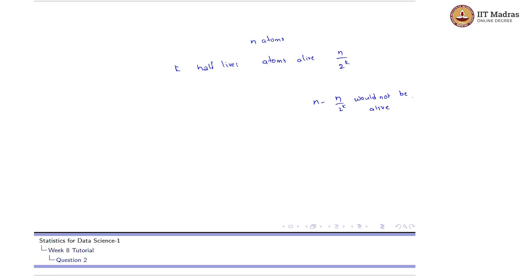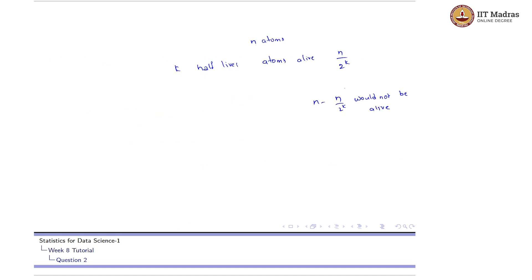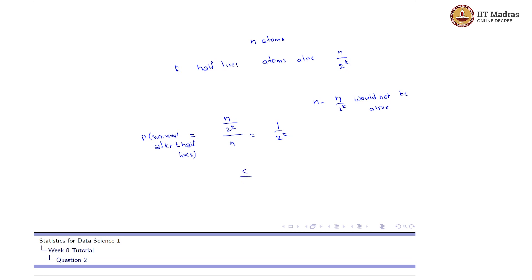For the probability: the probability of survival of the atom after k half-lives is given as c / 2^k. The probability equals the number of atoms left, n / 2^k, divided by the total number of atoms initially, n. So the probability equals 1 / 2^k. Equating: c / 2^k = 1 / 2^k, which implies c = 1.